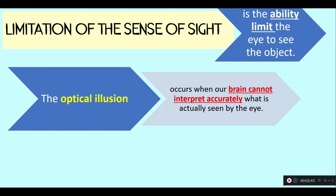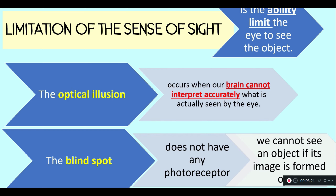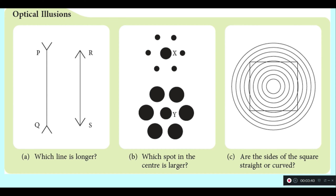Optical illusion occurs when our brain cannot interpret accurately what is actually seen by our eye. Meanwhile, we cannot see objects if the image is formed on the blind spot.